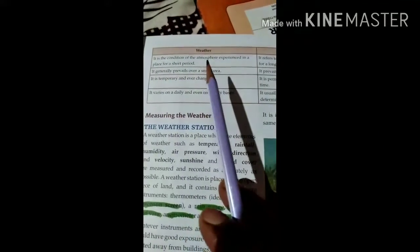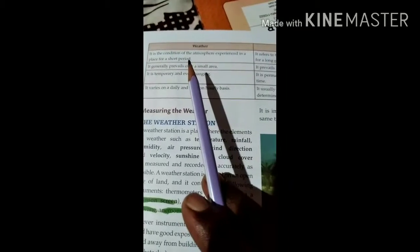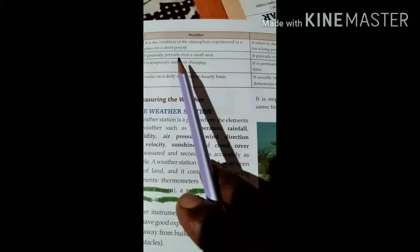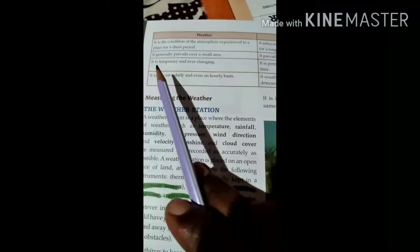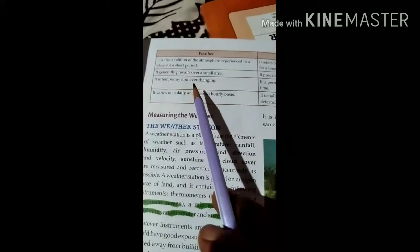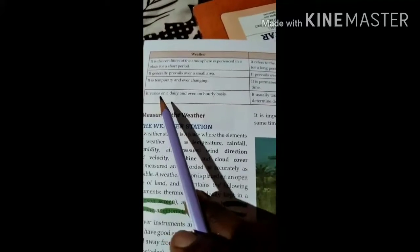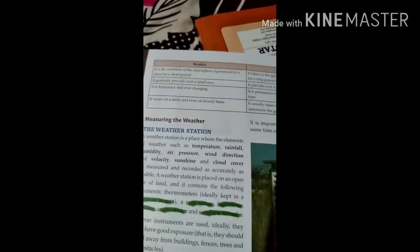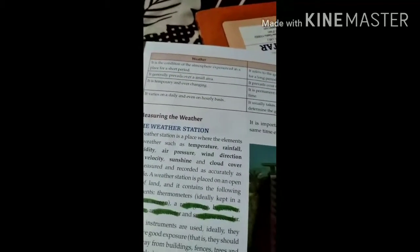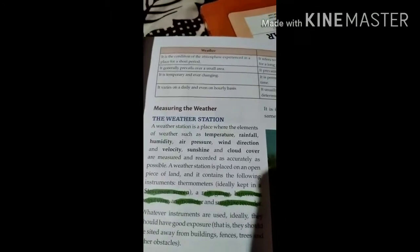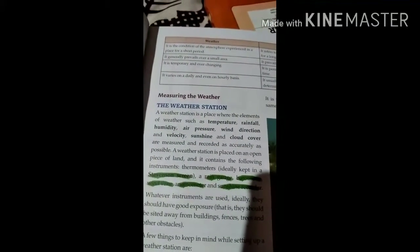Weather is the condition of the atmosphere experienced in a place for a short period. It generally prevails over a small area. It is temporary and even changing. Weather changes time to time, it doesn't remain in the same form or condition. It varies on a daily and even hourly basis. These days in the sky we see it is rainy, and then sometimes we see that the weather immediately changes. In the morning we experience sun, but after some time you will see clouds in the sky, and after some time there is rain. The weather changes every time, it doesn't remain for a long period.